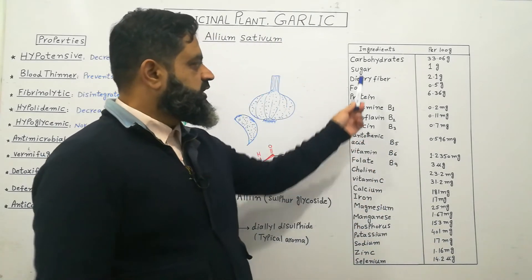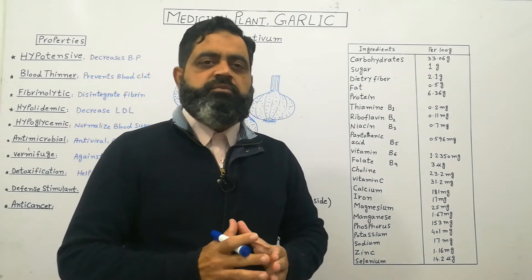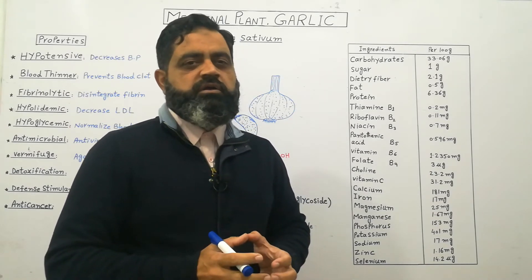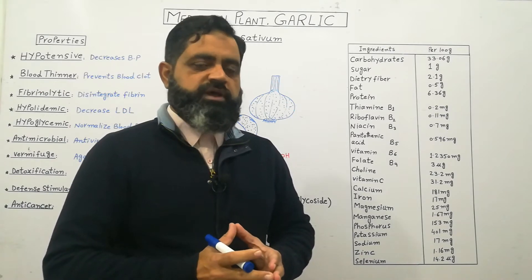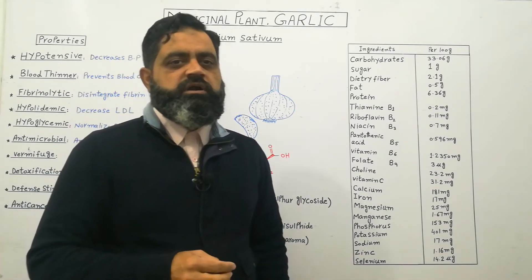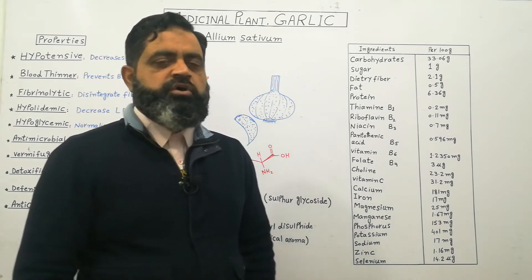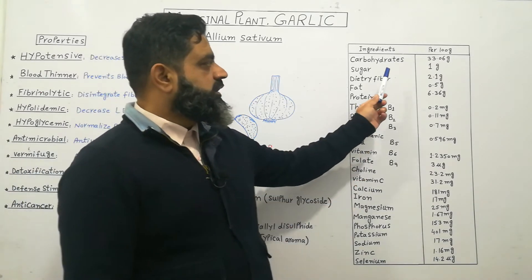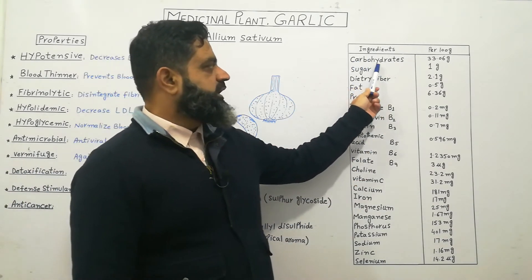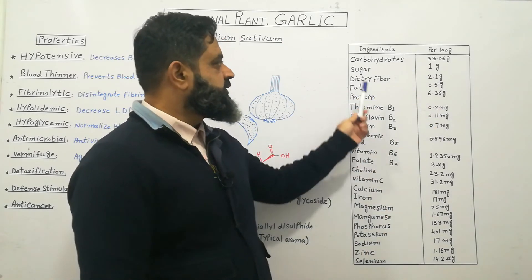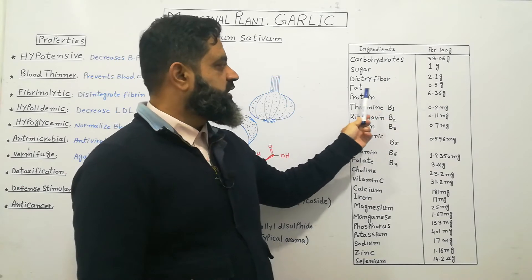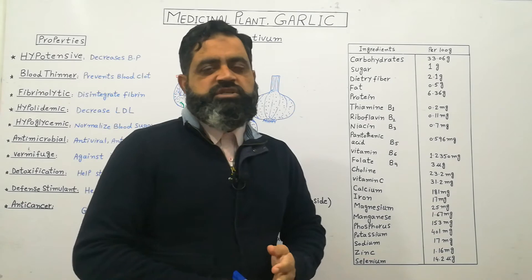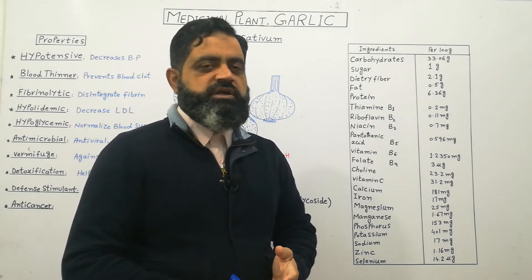I have made a table which contains all the ingredients present in 100g of garlic. Usually we do not use 100g garlic on a daily basis, but on a calculation basis I have used 100g of garlic. Usually the dose of garlic is 3 cloves a day, or more than 3 can also be used. In 100g of garlic: carbohydrates are present at 33.6g, sugar 1g, dietary fiber 2.1g, fat 0.5g, and protein 6.36g. These are the dietary ingredients which are present inside the garlic cloves.